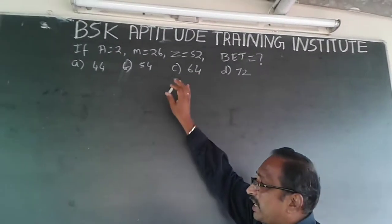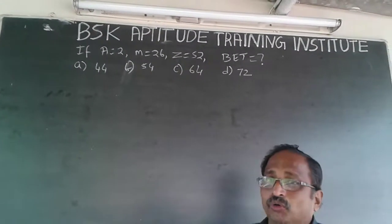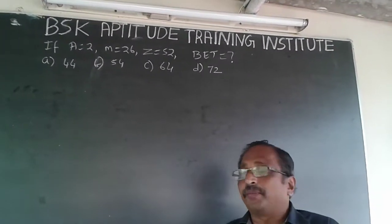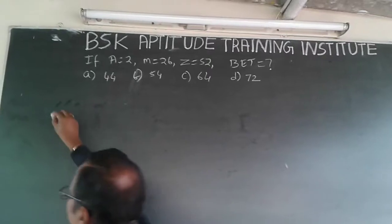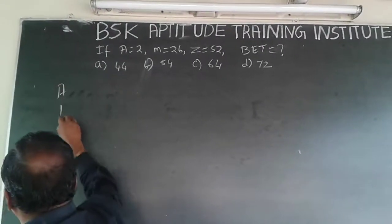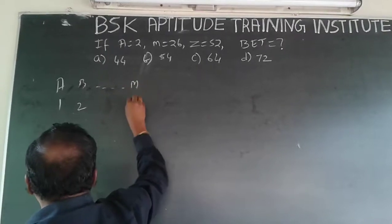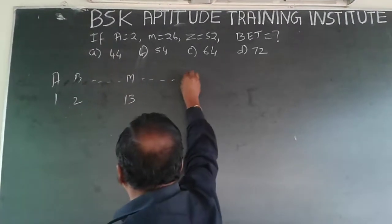Now what you understand here is, why should A be given 2? So the corresponding alphabet numbers are being doubled. A corresponding alphabet number is 1, B is 2, M will be 13, and Z is 26.